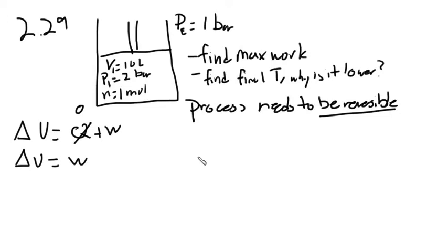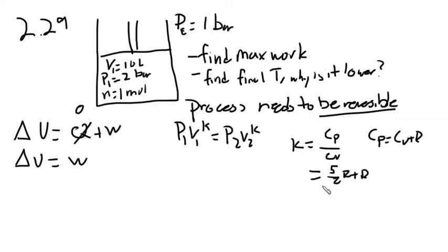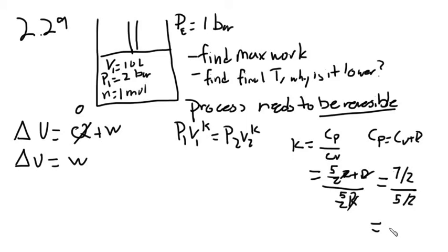In a reversible process, this relationship must hold: p1·v1^k = p2·v2^k, where k is the ratio of heat capacity at constant pressure over constant volume. We can find this ratio because cv = 5/2 R and cp = cv + R. Therefore, k = (7/2 R) / (5/2 R), and the R's cancel, giving 7/2 over 5/2, which equals 1.4.